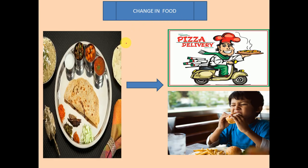First is changes in food. In earlier times, people used to have homemade food, but now there is a significant change — children and even adults prefer fast food. Earlier, people used to carry lunch boxes to their office, but now they prefer to order pizza or fast food from a restaurant. The consumption of fast food and oily food has led to many problems: children are facing obesity and adults are facing increased cholesterol levels, leading to serious health-related problems.